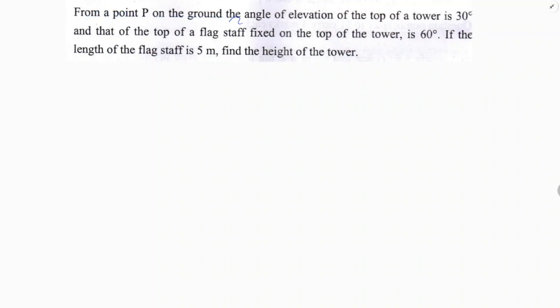From a point P on the ground, the angle of elevation of the top of a tower is 30 degrees and that of the top of a flagstaff fixed on the top of the tower is 60 degrees. If the length of the flagstaff is 5 meters, find the height of the tower.